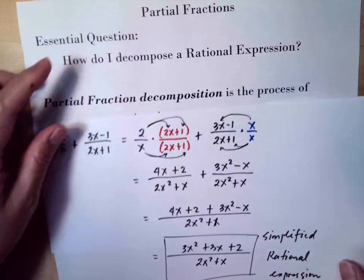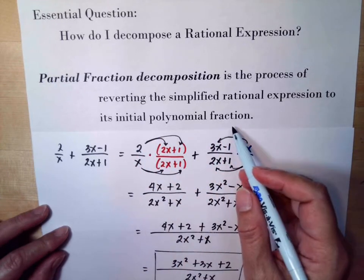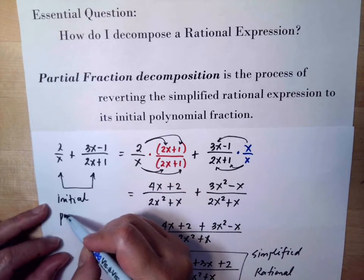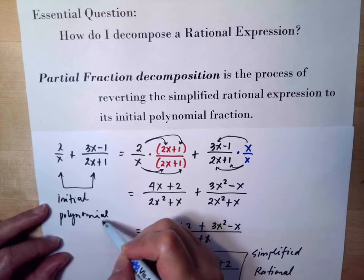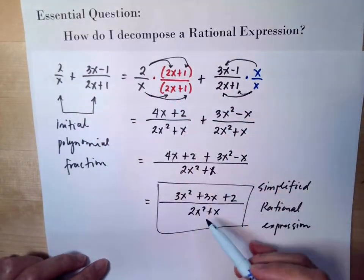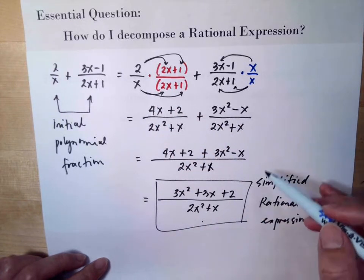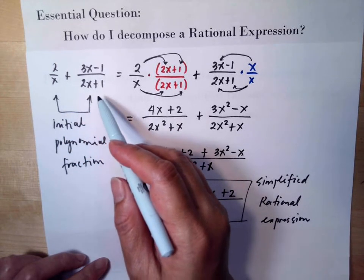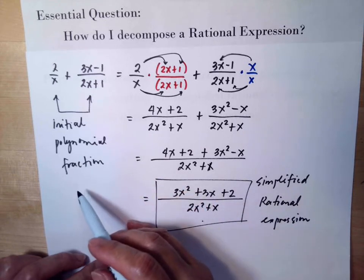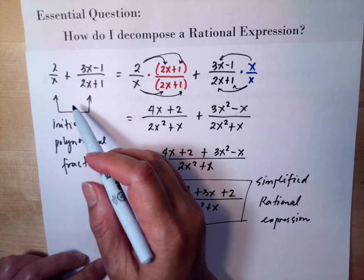Here in partial fractions, what we need to do is revert the simplified rational expression back to the initial polynomial fraction — those two separate fractions are the initial polynomial fractions. In partial fractions, we break the simplified expression into two or three initial polynomial fractions. We really need this for calculus; you cannot do integration unless you break your rational expression into initial polynomial fractions.